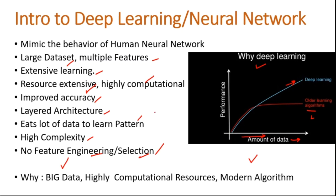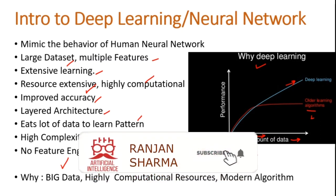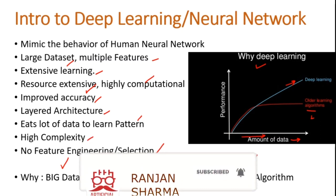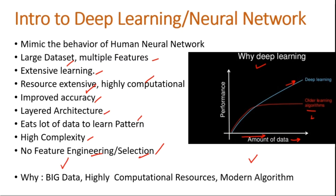We don't consider deep learning for every small problem. If it's a small problem, we try machine learning basic algorithms first — if we're getting good results from machine learning, we don't go to deep learning, because deep learning requires a lot of resources and cloud costs, making it money-intensive. We only use deep learning when we have a high amount of data, multiple features, higher dimensions, and increasing complexity. Also, deep learning requires no domain knowledge.